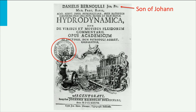On the cover there is a remarkable addition to Daniel's name, indicating that he was the son of Johann. The relation between the two was a bit troublesome, so with his father being a renowned mathematician, Daniel either put it there to give himself more standing, or he wanted to show his good intentions towards his father.